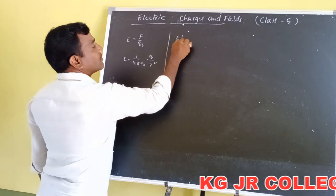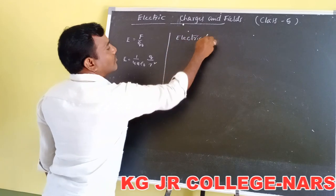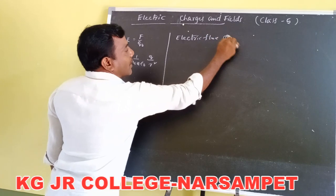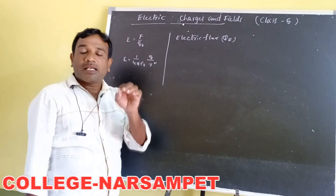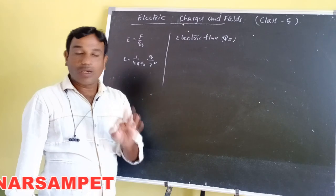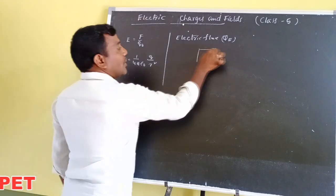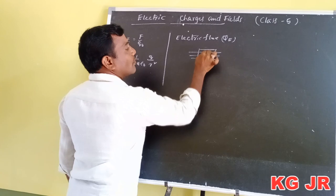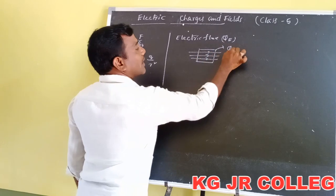What is the electric flux? It is denoted by phi (φ). The number of electric lines of force passing through a unit area is called electric flux.